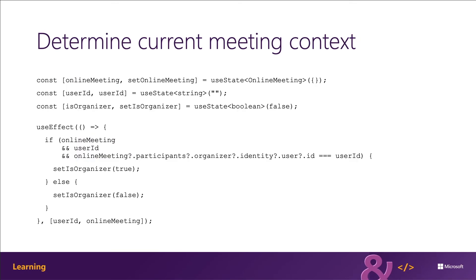One way to do this is using a React hook, as the previous examples have shown. In this example, the online meeting state property is set after retrieving the details of a current meeting using the Microsoft Graph. The online meeting type is one of the types coming from the Microsoft Graph type package — the @microsoft/microsoft-graph-types package. Using a React hook, you can set the current user's is-organizer property, which I'm going to define as a state property.